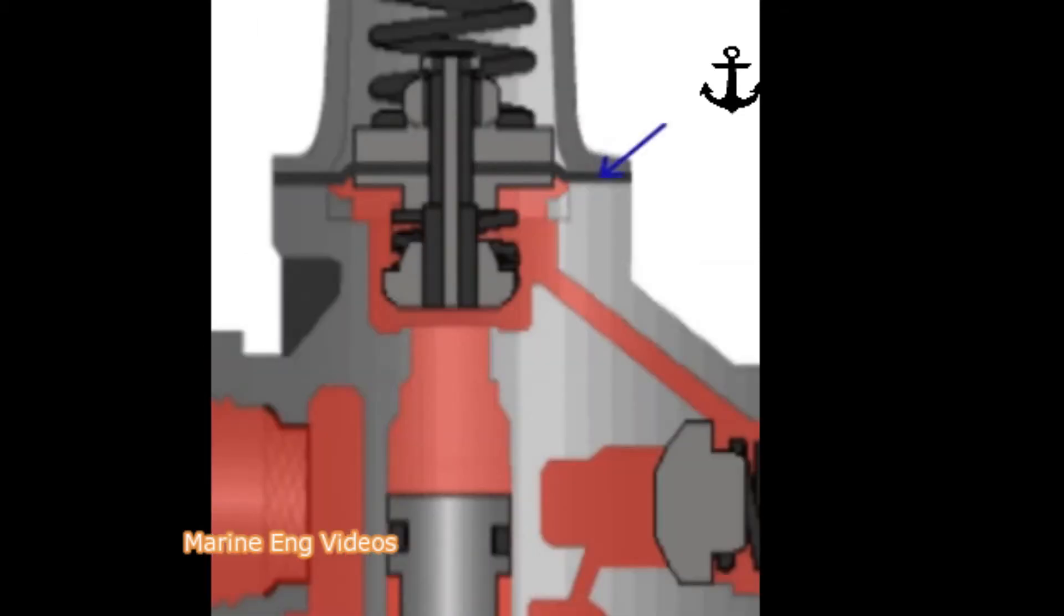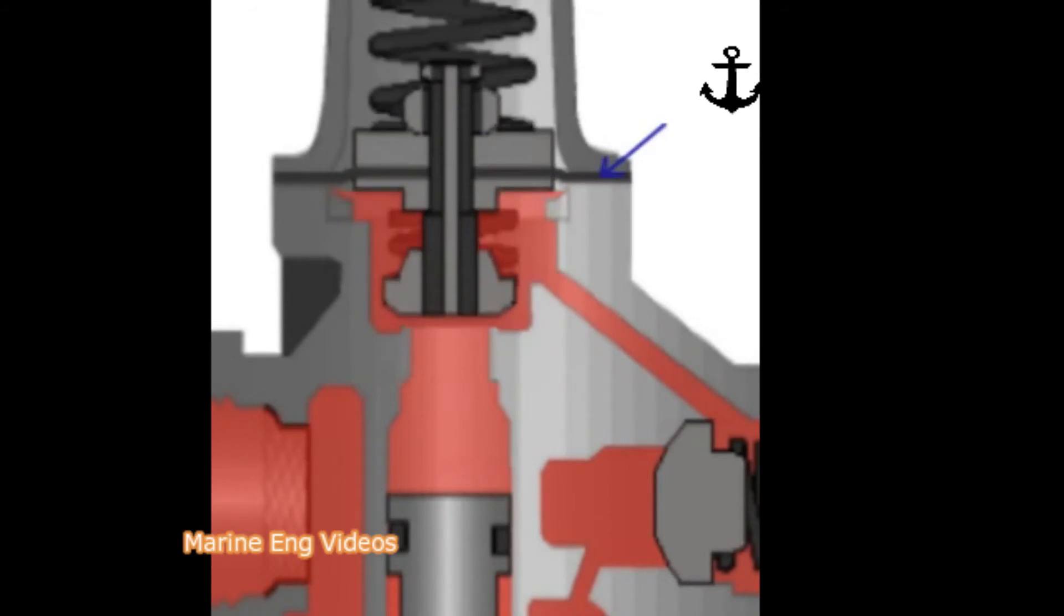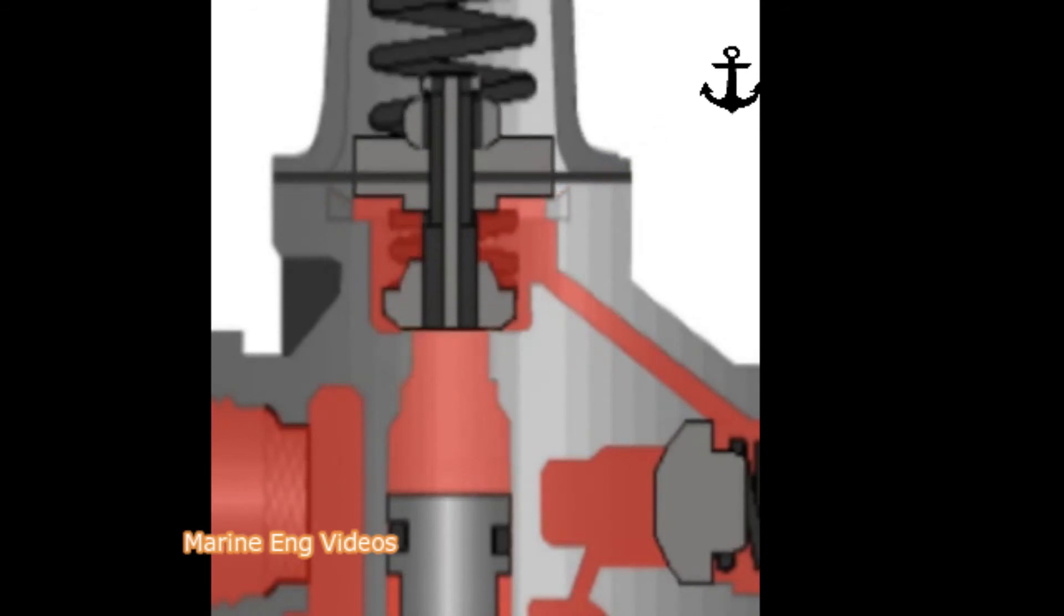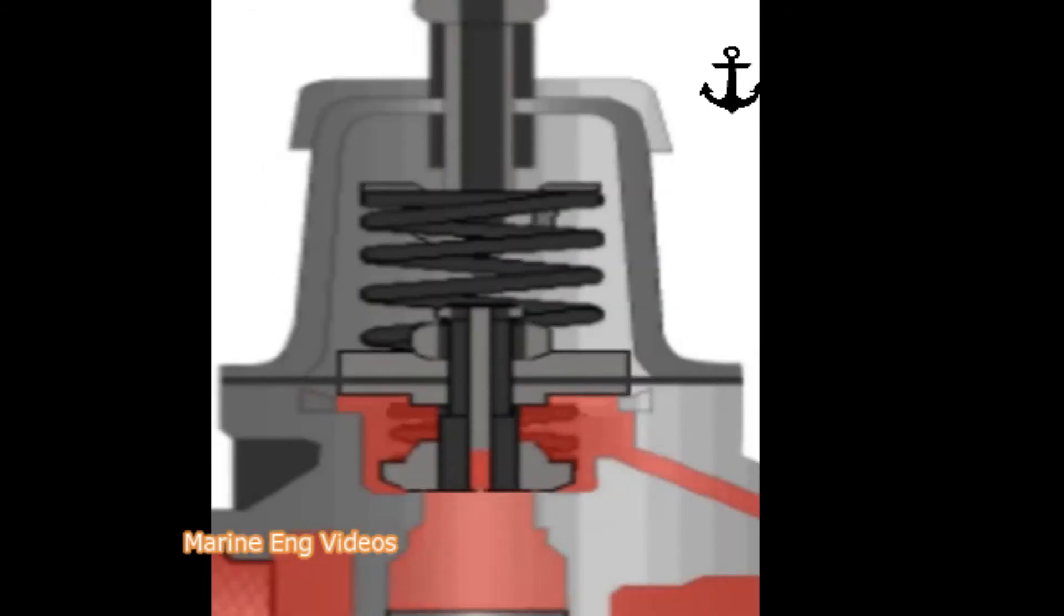This causes the diaphragm to move down and close the passage connecting the unloader plunger. Air supply to the unloader plunger is cut off and further movement of the diaphragm down causes the governor exhaust